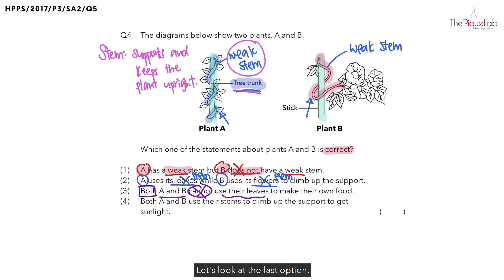Let's look at the last option. Option 4 mentioned that both A and B use their stems to climb up the support to get sunlight. Is this what we have mentioned earlier? Yes. And that's why the answer for this question is option 4.